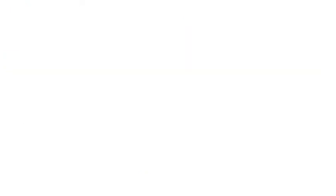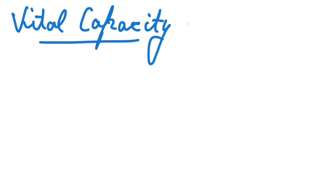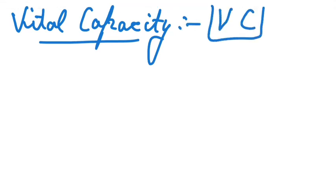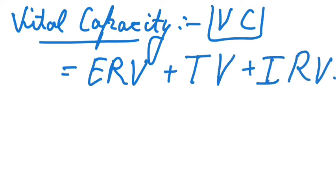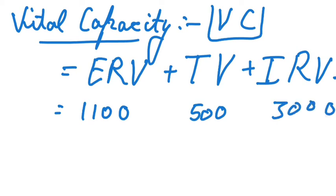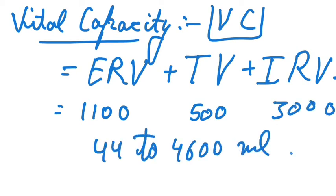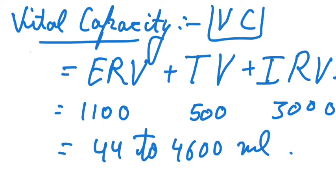Next we have vital capacity, which is the maximum volume of air a person can breathe in after a forceful expiration. This includes expiratory reserve volume, tidal volume, and inspiratory reserve volume. By combining all these, vital capacity comes out to be the maximum volume of air a person can breathe out after a forceful inspiration, which is around 4600 ml.